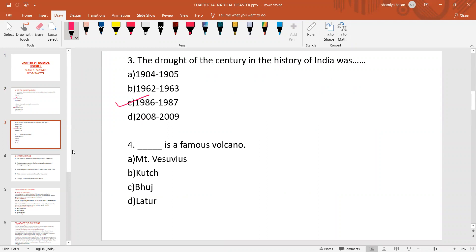Blank is a famous volcano. Mount Vesuvius, Kutch, Bhuj or Latur. That means the answer is Mount Vesuvius.